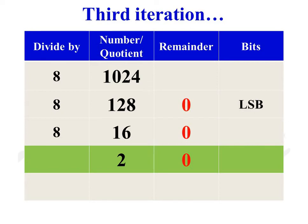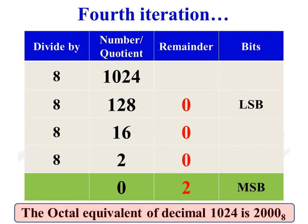During the third iteration, the quotient is not equal to 0, so we continue for a fourth time. During the fourth iteration, the quotient is equal to 0, so the conversion process is complete. The remainder of the first division forms the LSB, and the remainder of the last division — which is 2 — is the MSB. So the octal equivalent of decimal number 1024 is 2000.